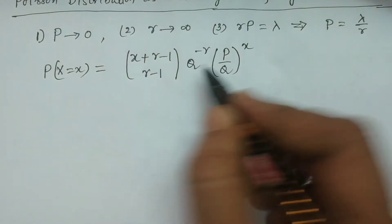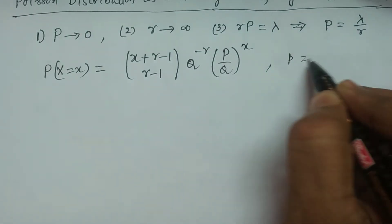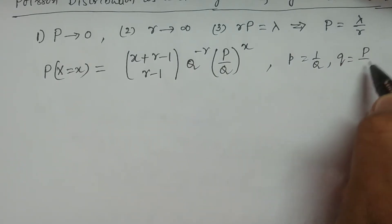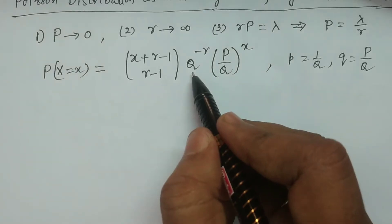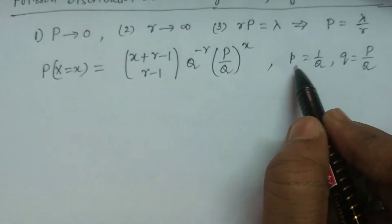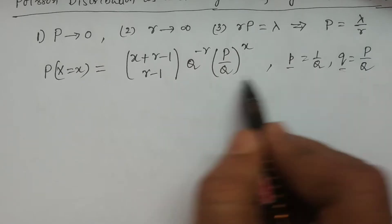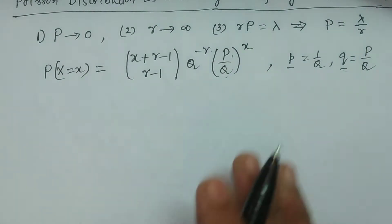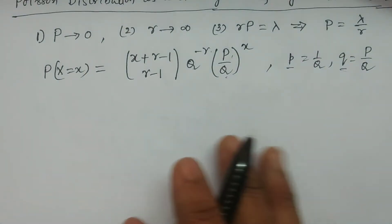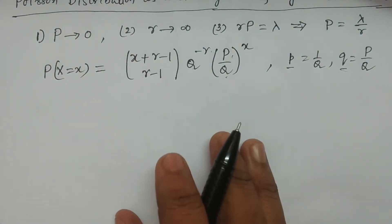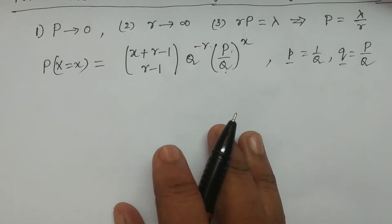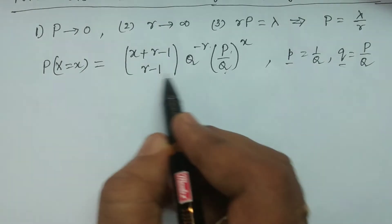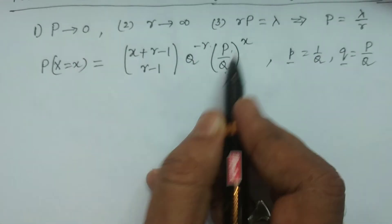Here small p equals 1/q, and small q equals capital P divided by capital Q. The form p^r · q^x is converted to q^(−r) · (p/q)^x. So concentrating on the main limiting case, the formula is: (x + r − 1) C (r − 1), times q^(−r), times (p/q)^x.